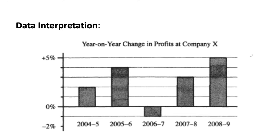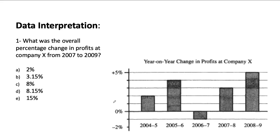Recently one of my students got a tricky data interpretation question, so I thought of making a video on that. I included two similar types of questions in this video. This is the first type, in which we are provided with the year-on-year change in profits at Company X. Positive percentage changes are on the upper side and negative on the lower side, divided by years from 2004-2005 onwards. For example, the first bar shows a 2% increase in profit — meaning if the value at the start of 2004 is 100, it increases to reflect that 2% by end of 2004, and that same value carries into the start of 2005.